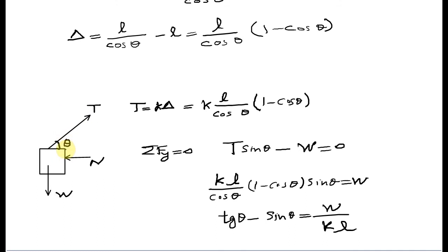We have the force of the spring, which I call T. It's applied at the direction of theta. T equals the spring constant times the elongation, which is K times L over cosine theta times one minus cosine theta.